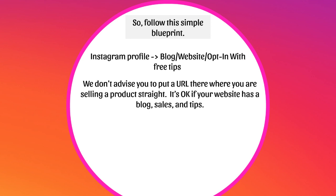We don't advise you to put a URL where you're selling a product straight. It's actually better if that link is going to your blog or a content piece with tips — maybe tips on scuba diving, the top ten things you shouldn't do as a newbie scuba diver, or the top ten gears that you use. You can tell them the gear you use and link to affiliate links like Amazon affiliate links, so you're indirectly making money by providing free content. That's another method of indirect selling.